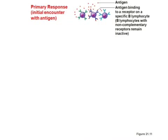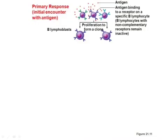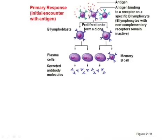Once the correct binding happens, the B cell starts to clone itself. All those clones: some become plasma cells that secrete those immunoglobulin receptors — now released into the blood, which is why it's called humoral immunity. Plasma cells lose their surface receptors and secrete the antibodies freely, and some of that clone population becomes memory cells.